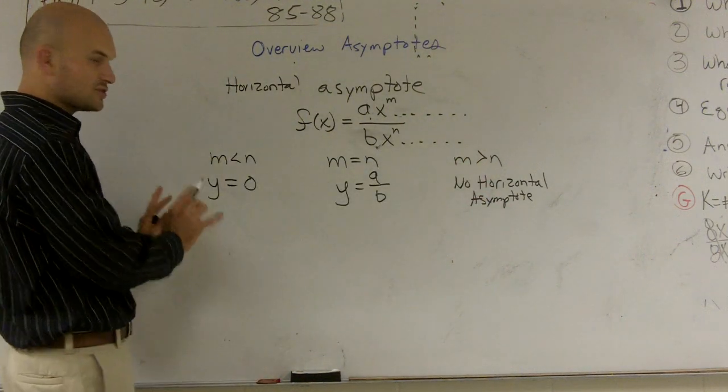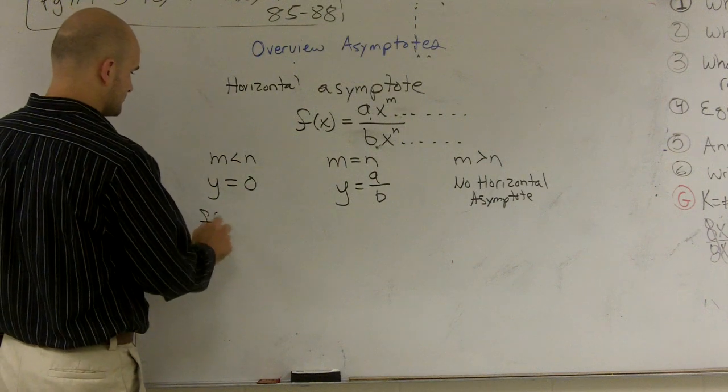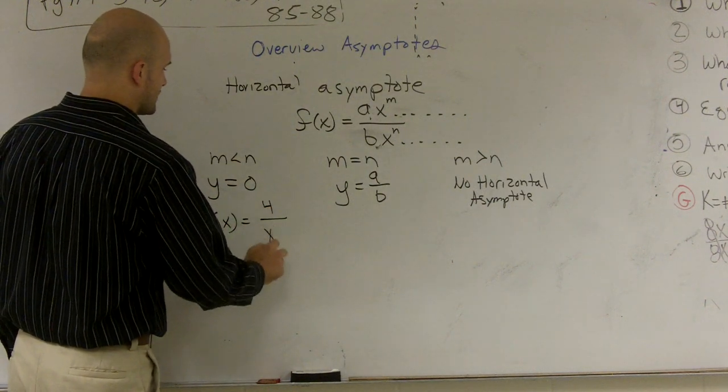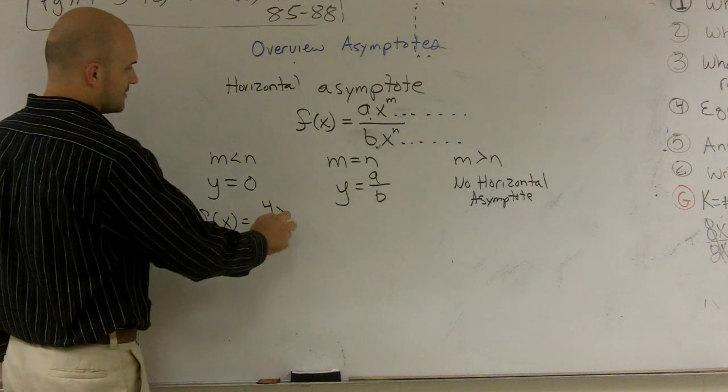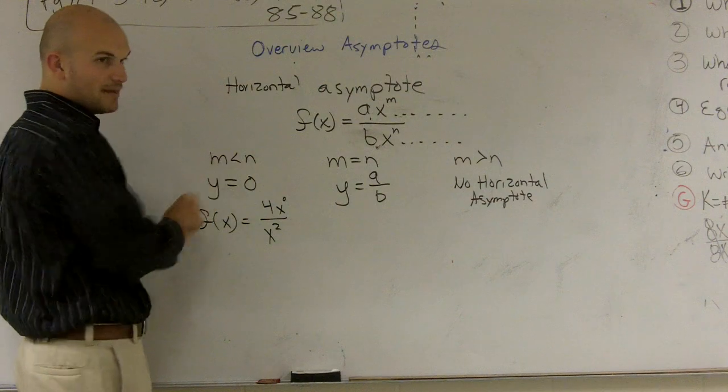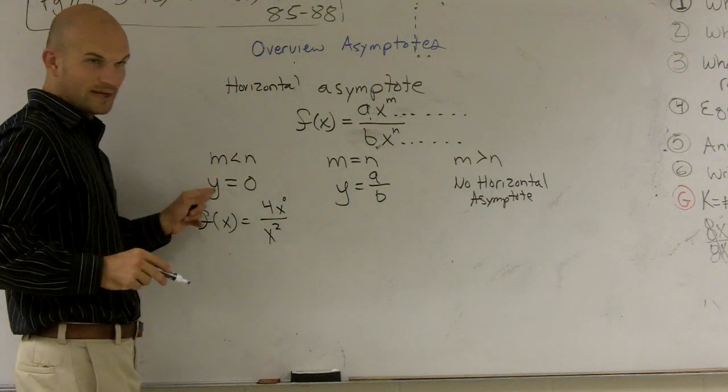So I'll just write an example just so you guys can see. Let's say this is 4 over x squared. Here, my x can be x to the 0, so since 0 is less than 2, my horizontal asymptote would be y to the 0.